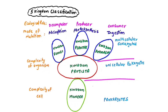Kingdom Fungi are decomposers, feeding on dead and decaying matter — their mode of nutrition is absorption. Kingdom Plantae are producers, providing food to every living organism through photosynthesis. Kingdom Animalia are consumers that feed on producers, taking in food by ingestion — they are multicellular eukaryotes. In the five-kingdom classification: Monera evolved into Protista, and Protista gave rise to the multicellular kingdoms — Fungi, Plantae, and Animalia.